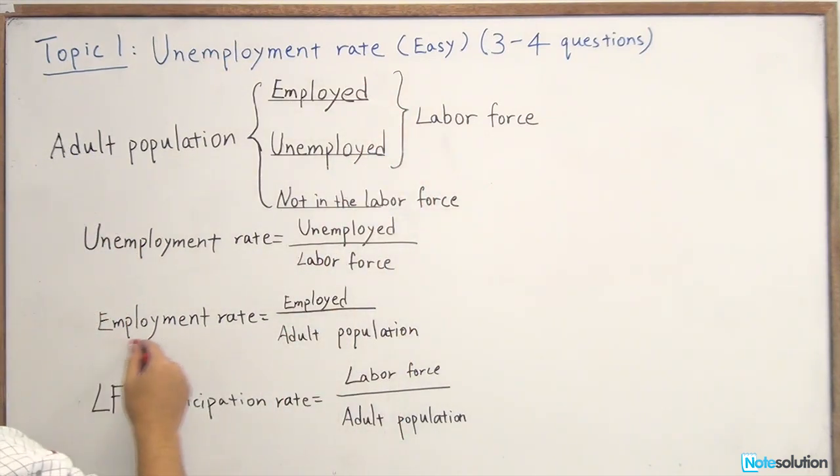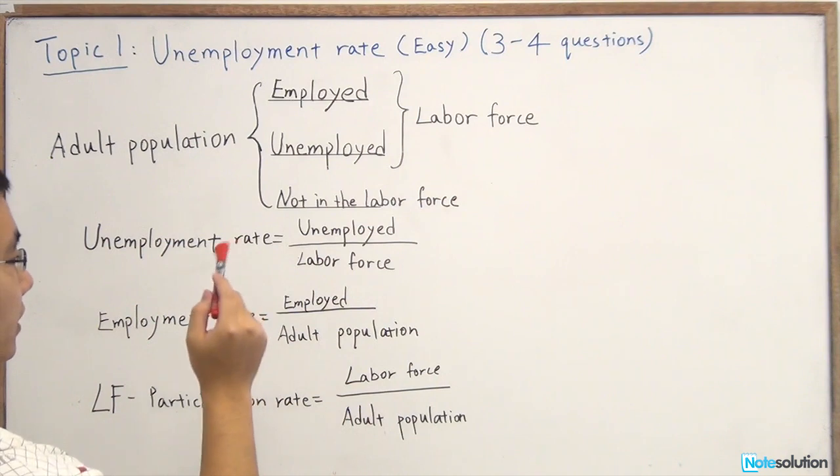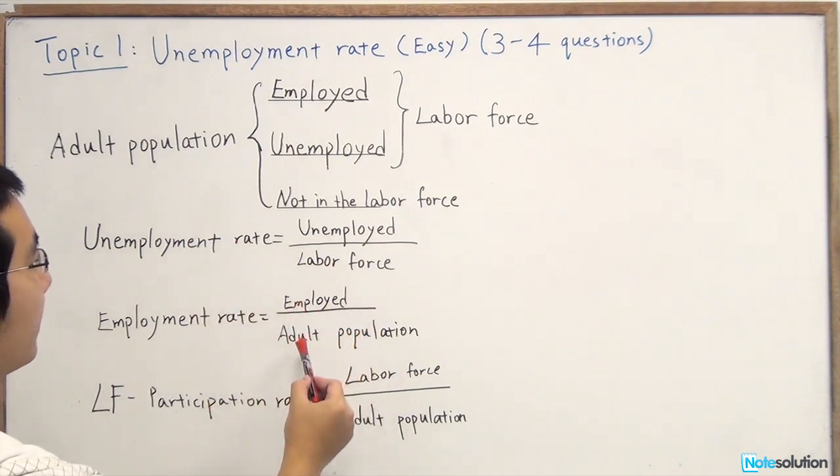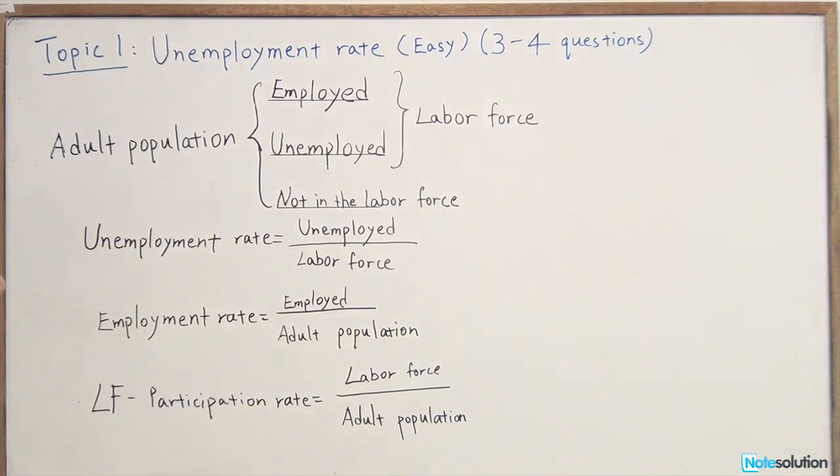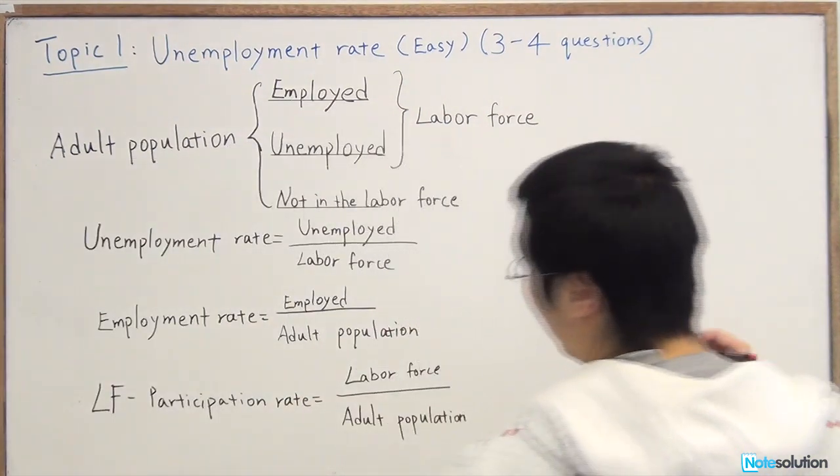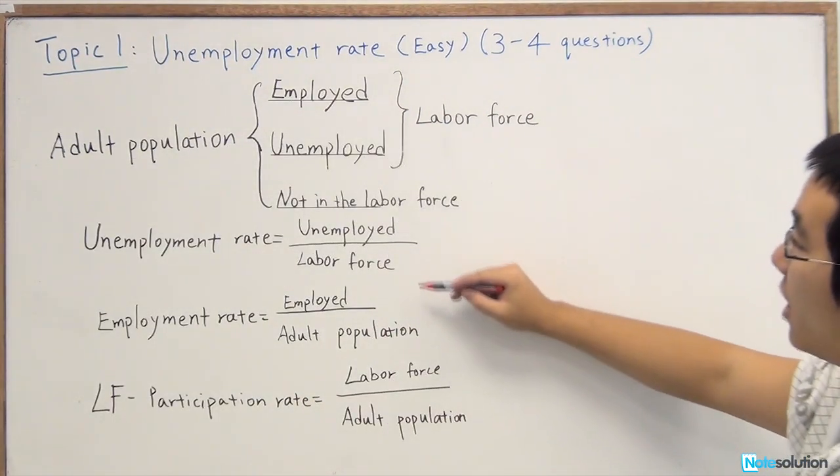For calculating the employment rate, we're using the employed number divided by the adult population, which is actually here. As you can see, you need to pay attention that they have a different denominator.